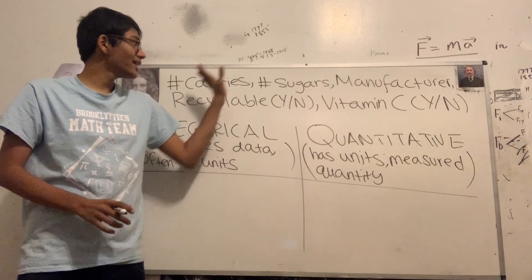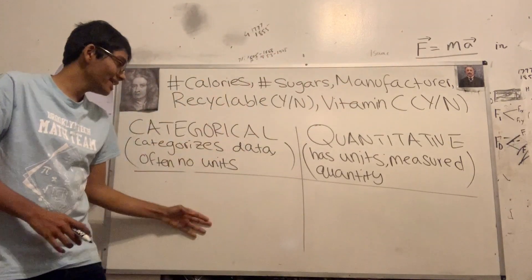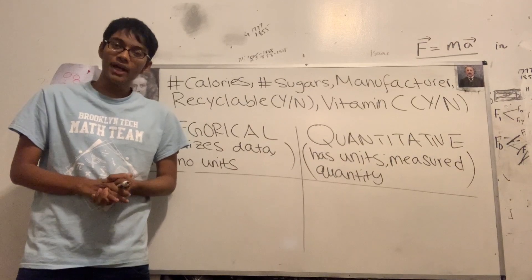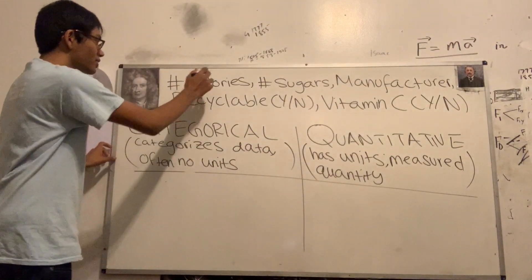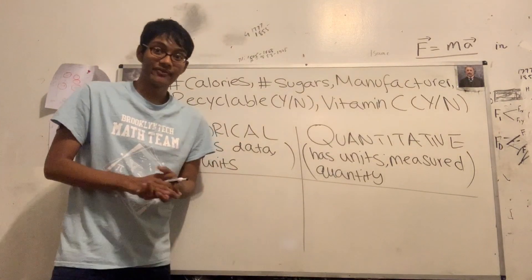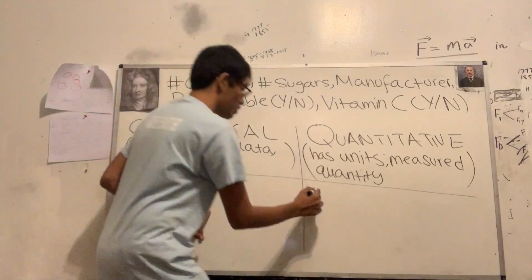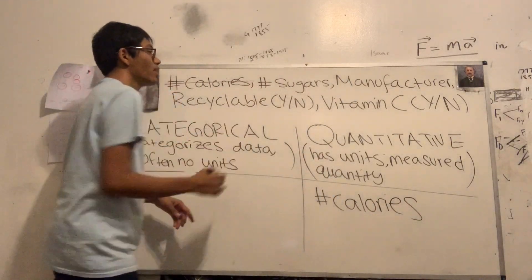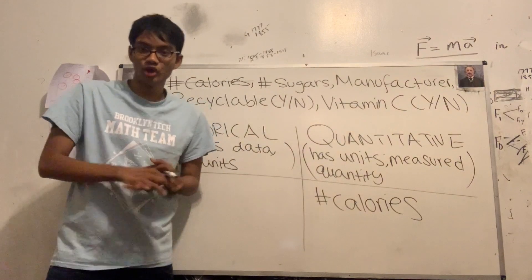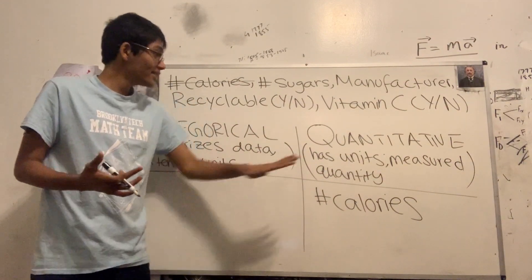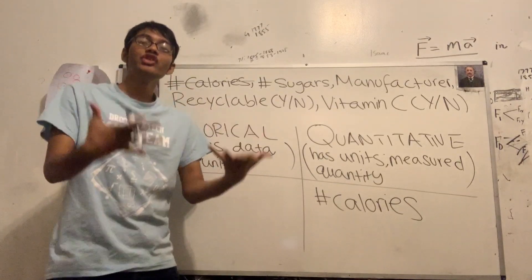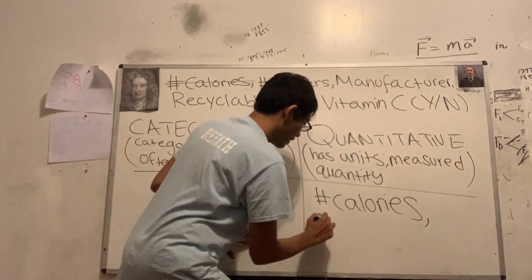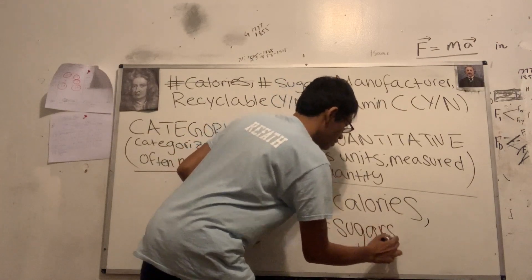Let's go ahead and classify all of these variables about the cereal box. Number of calories — that's going to be quantitative, because it has units and it can be measured. Amount of sugar is also going to be quantitative, because sugar has units — grams — that's an SI unit. So that's a quantitative variable.